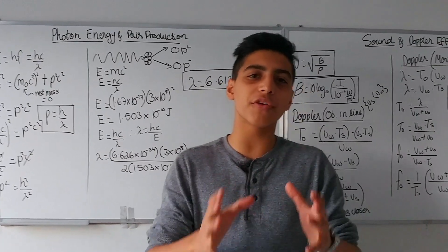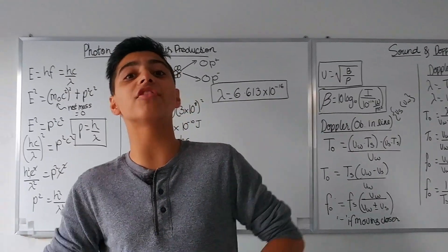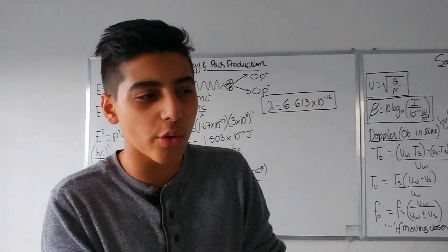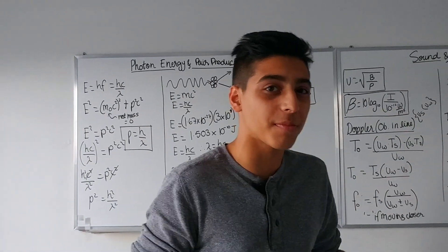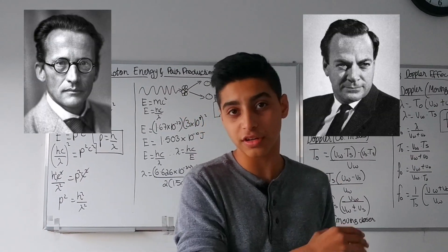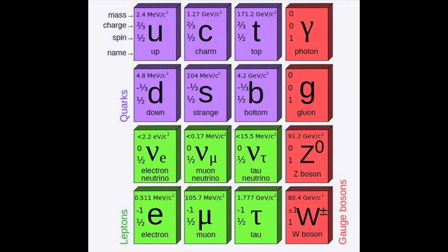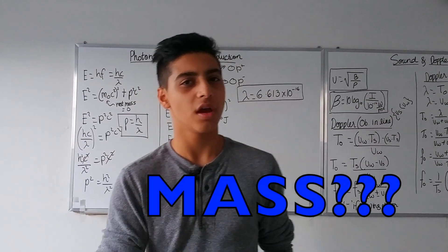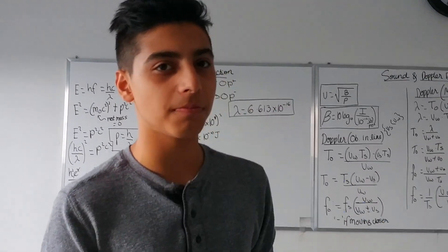To understand this, we must first understand why this question even had to be answered. Couldn't we live without knowing what exactly gave other particles mass? Well, particle physicists definitely couldn't, due to the existence of the standard model of particle physics, which is a theory that unifies all known matter and fundamental forces of nature, with the only missing element being mass and where it truly came from.